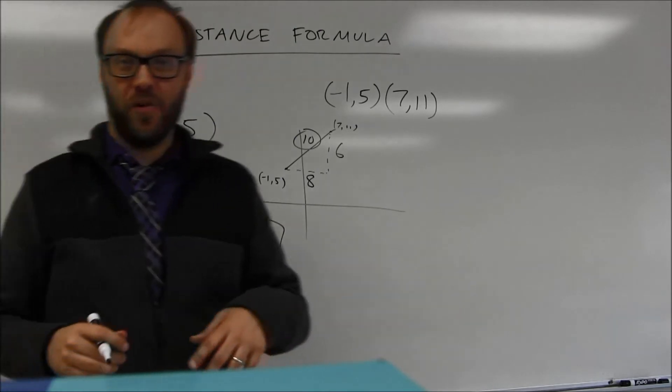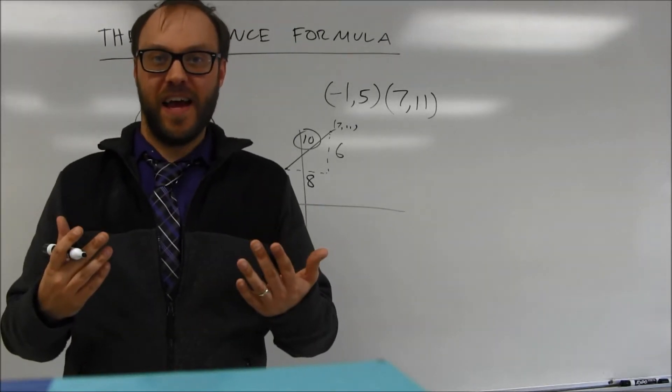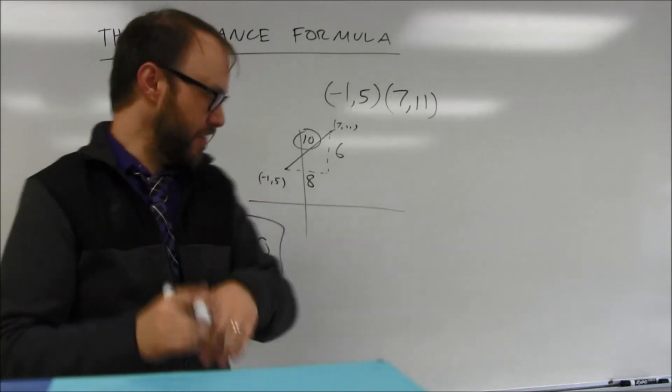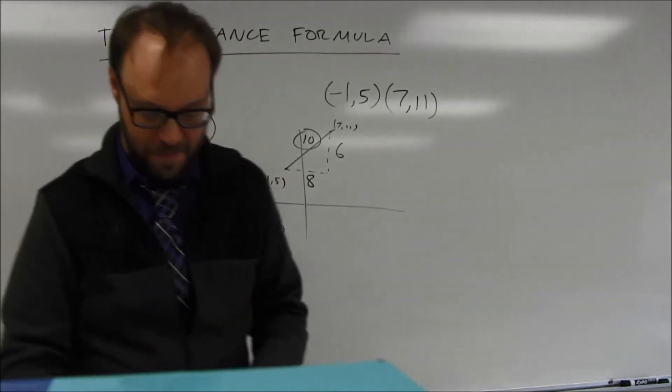In other words, I'm going to get a right triangle with side lengths of 6 and 8. It's going to be a 6, 8, 10 right triangle, and that's going to give me my third side.